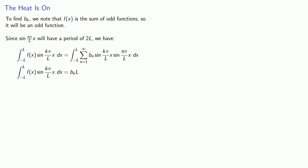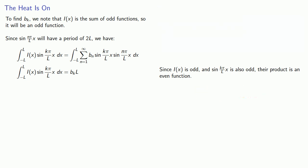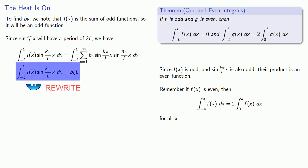Now since i of x is odd, and sine k pi over l x is also odd, their product is an even function. And if f of x is even, then the integral over any interval symmetric about the origin is going to be twice the integral from 0 to the endpoint. And that allows us to simplify this expression. And we can find b of k.